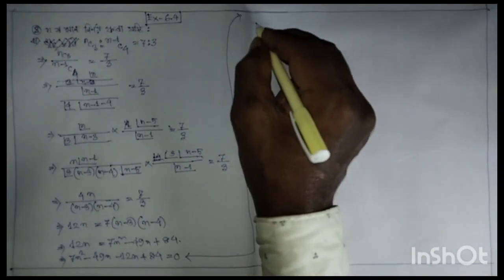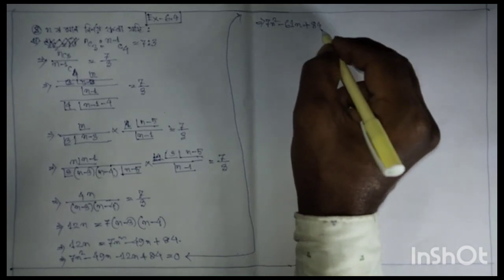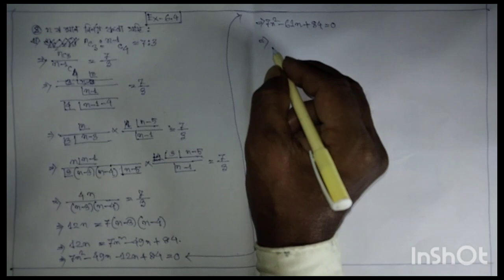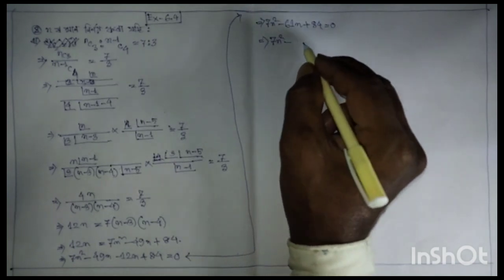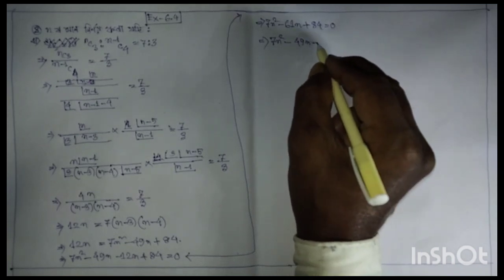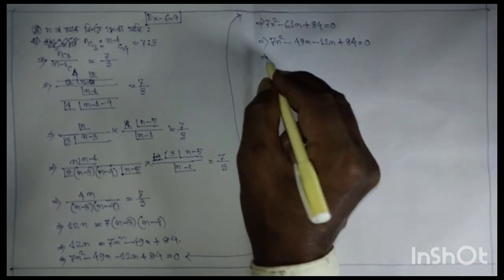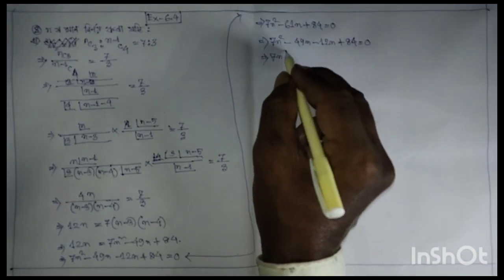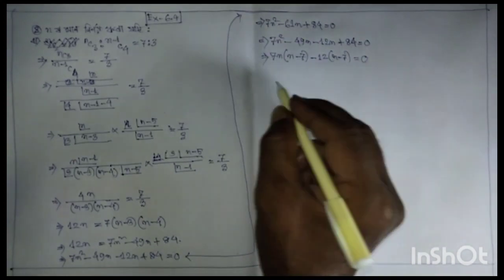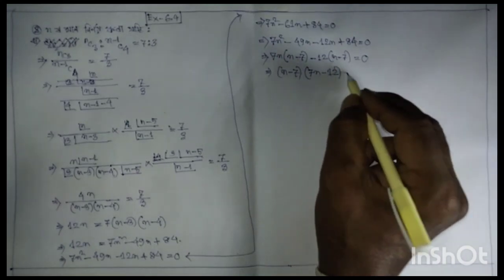Implies 7m squared minus 61m plus 84 is equal to 0. Implies 7m minus 49m minus 12m plus 84 is equal to 0. Implies 7m into m minus 7, minus 12 into m minus 7, is equal to 0.